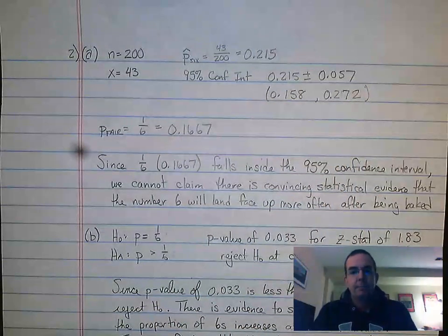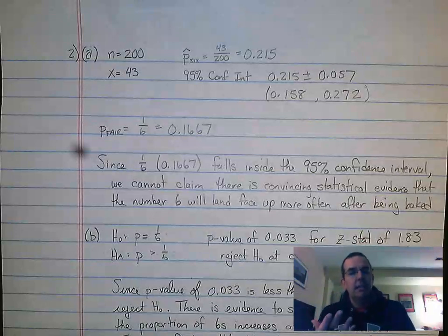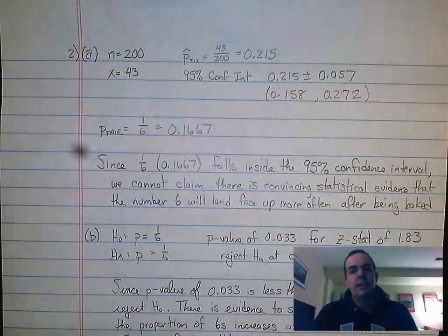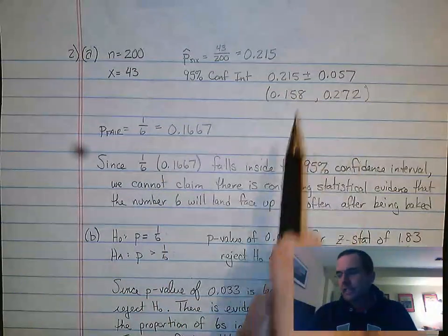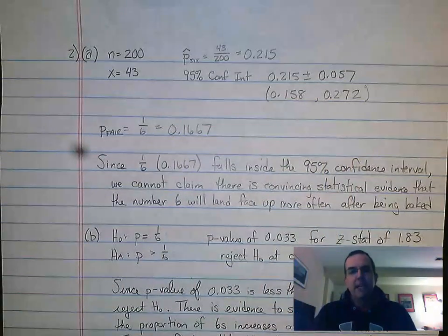And the first question asked, does the confidence interval give you evidence to say that there's something going on? In this case, the 0.1667 falls inside the interval, it's in that interval, so it doesn't give me evidence.